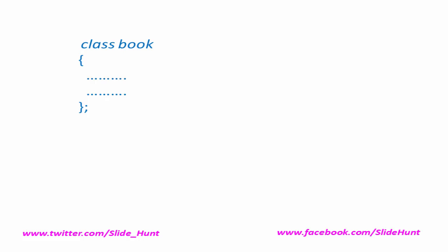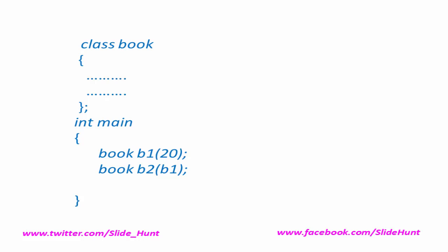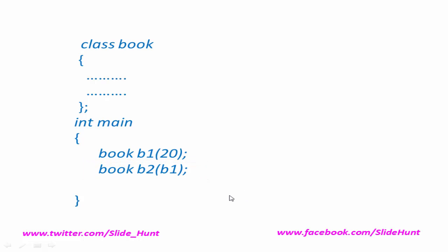Next we see how to call a copy constructor. Suppose this is a class and inside the main function I am going to create an object b1 of class book, initialized to 20. Next we create another object of class book, book b2, and here we pass the object b1 as an argument. This statement will call the copy constructor, defining object b2 and initializing it to the value of b1. We can also call the copy constructor in this form: book b3 equal to b1.